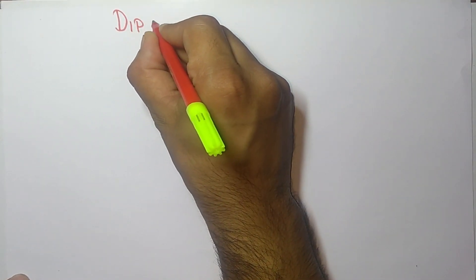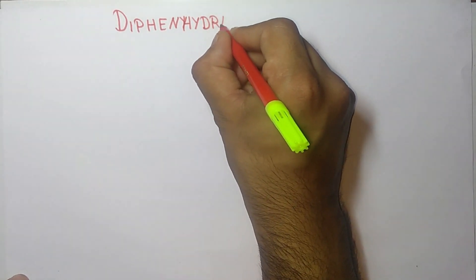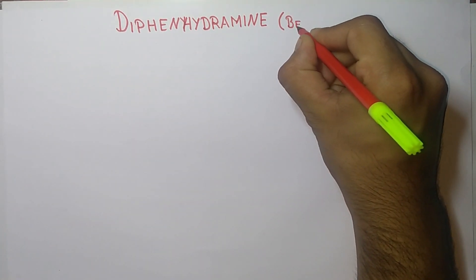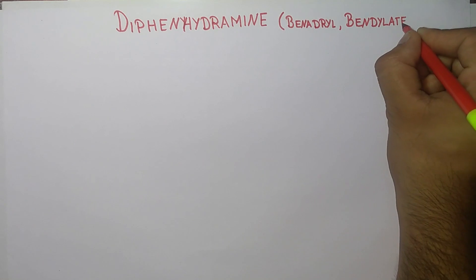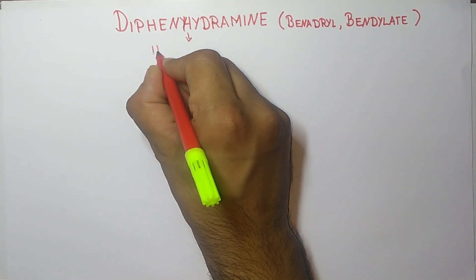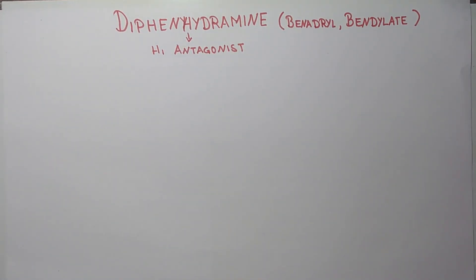Hello students, welcome to the channel. Today in this video we are going to discuss the synthesis of diphenhydramine. It is also known as Benadryl or Bendylate, and it is an H1 antagonist.